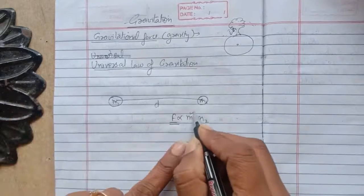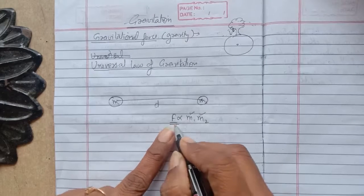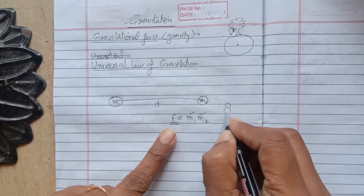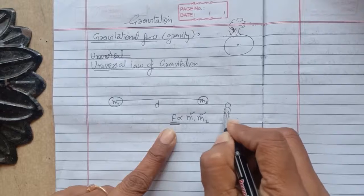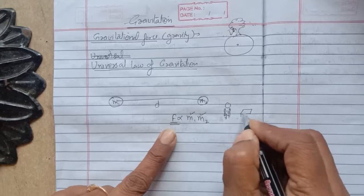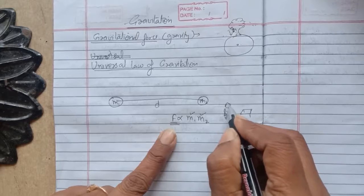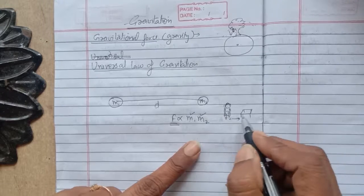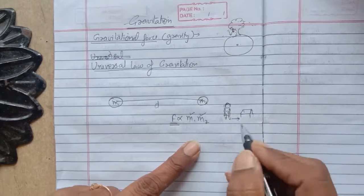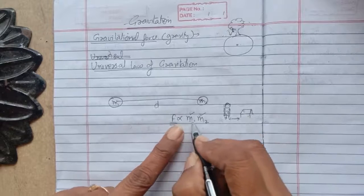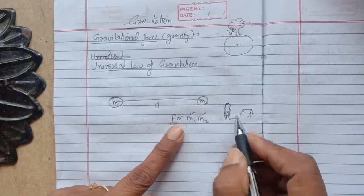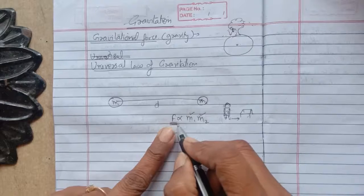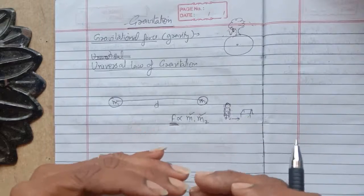It means this force depends on the mass of the objects. If the objects have higher mass, the force will be greater. For example, suppose you are here and this is a table. According to the law, you and this table have some force between you. This force is directly proportional to the mass of both — you and the table. Since you and the table do not have enough mass, the force is really so small — so small that you are not able to feel it.